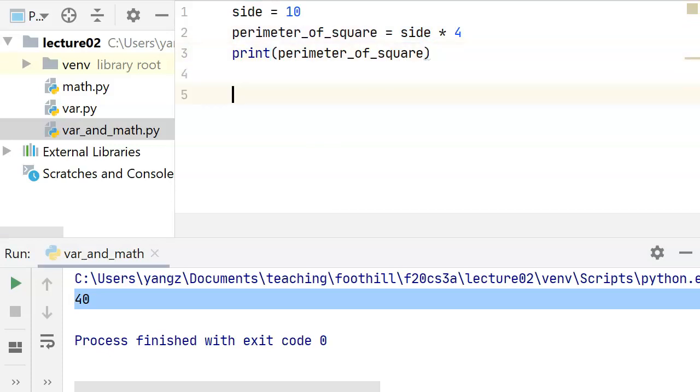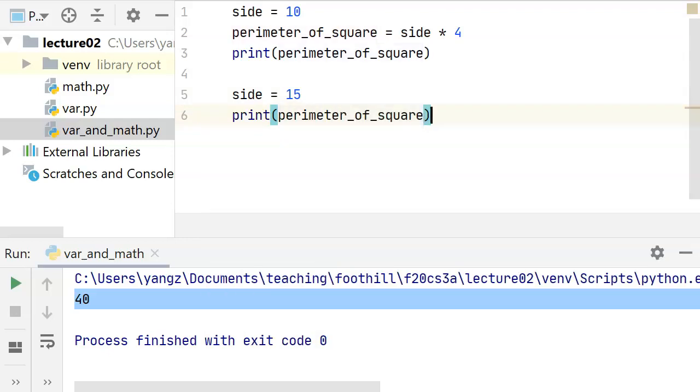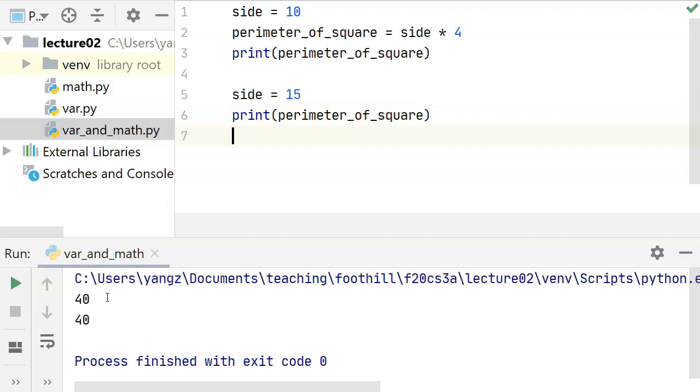Now let's do another thing. What if here I'm going to change side to let's say 15? Okay, and now obviously side should be 15 at that point, but what about the perimeter of square? Well, you can try to guess what that is. I'm going to run it, and well, the second time around it's still 40.